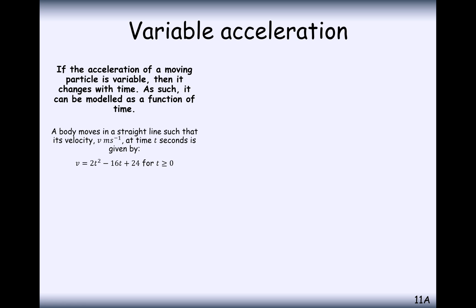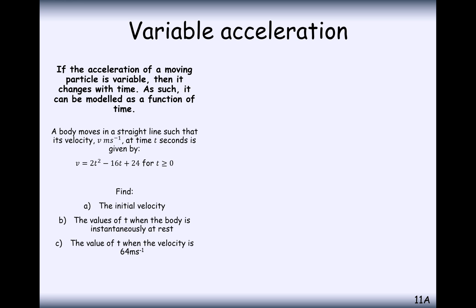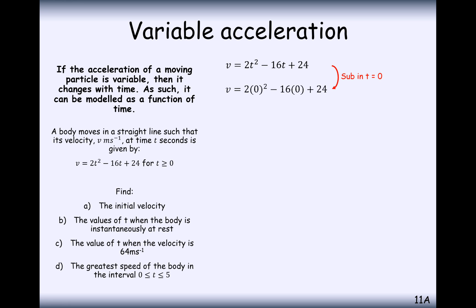Another situation: a body moves in a straight line such that the velocity at t seconds is given by an expression in t, where t is greater than or equal to 0. We're asked to find the initial velocity, the values of t when the body is at instantaneous rest, and the value of t when the velocity is 64 metres per second. We've seen displacement as a function of time; we can also have velocity or acceleration as a function of time. To find the initial velocity, substitute t equals 0, giving v equals 24 metres per second.